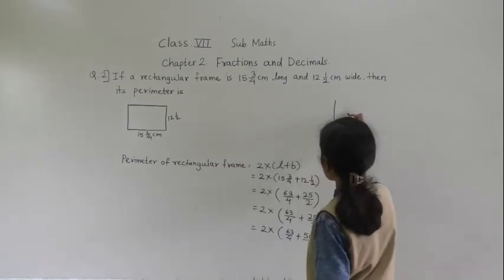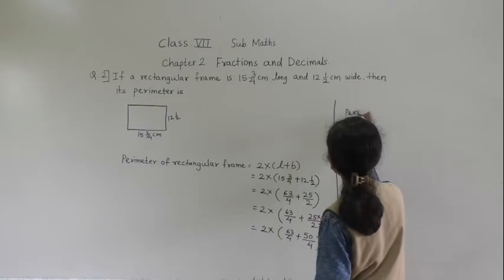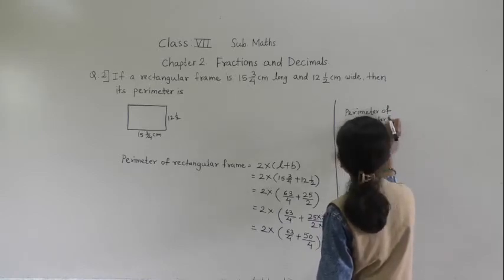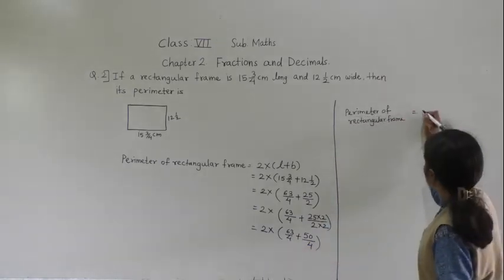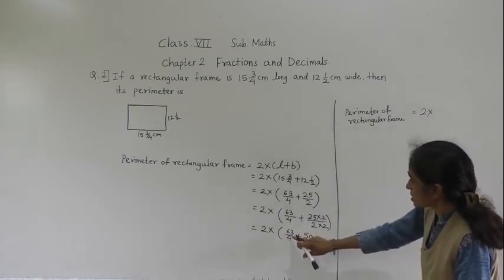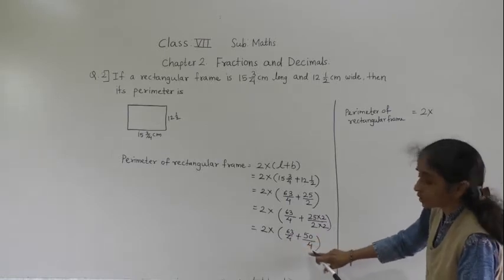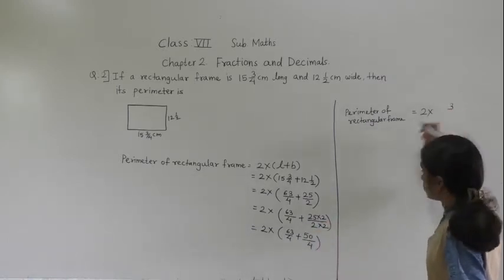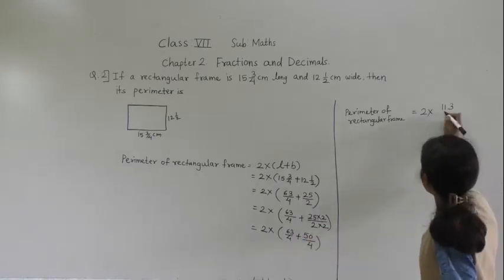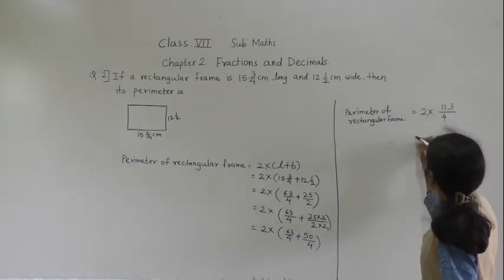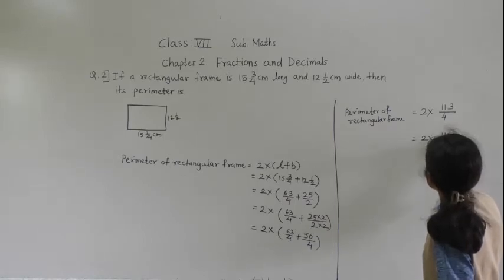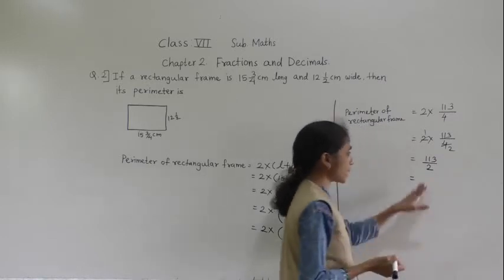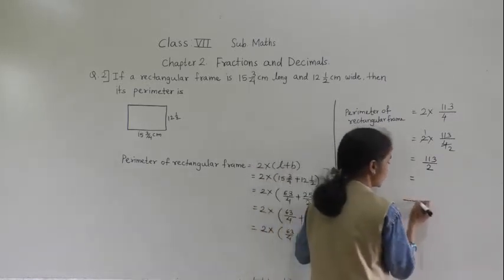Now we can add the numerators: 63 upon 4 plus 50 upon 4. 0 plus 3 is 3, 6 plus 5 is 11, so we get 113 upon 4. We can reduce this: 2 ones are 2, 2 twos are 4, giving 113 upon 2. This is an improper fraction, so convert to mixed fraction.